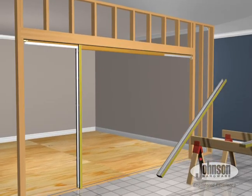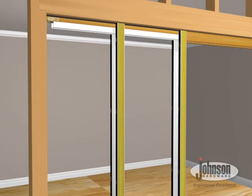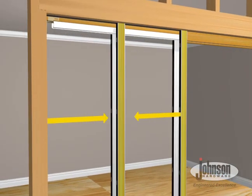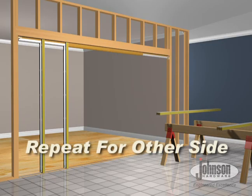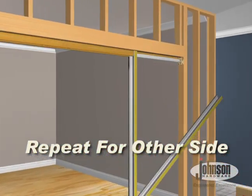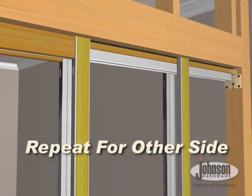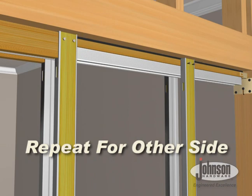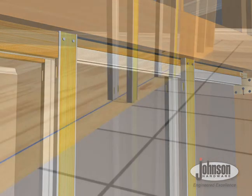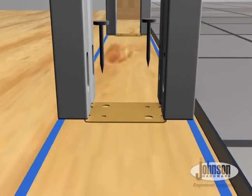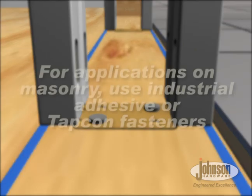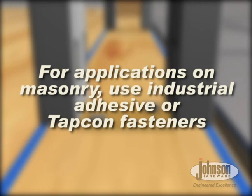Now you can nail the other split studs midway in the pocket opening. Plumb split studs between chalk line and nail to floor. For applications on masonry, use industrial adhesive or TAPCON fasteners.